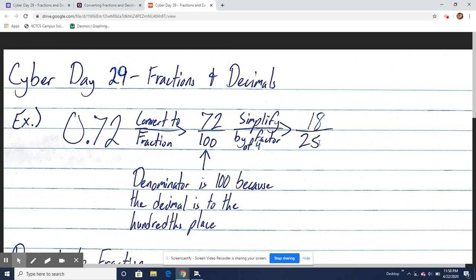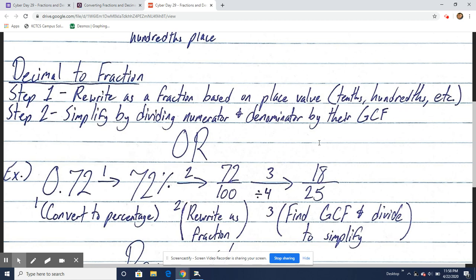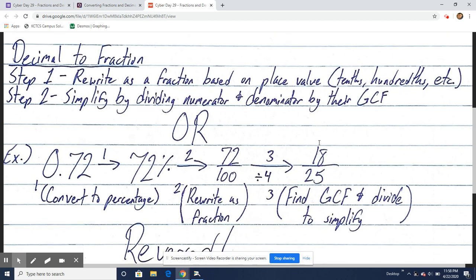Simple enough, right? So decimal to fraction, let's review the steps real quick. Decimal to fraction step 1: Rewrite as a fraction based on place value. Tenths, hundredths, thousandths, etc. Step 2: Simplify by dividing the numerator and denominator by their greatest common factor.